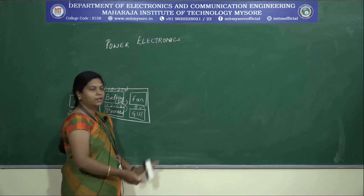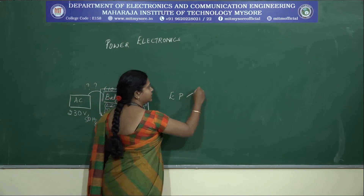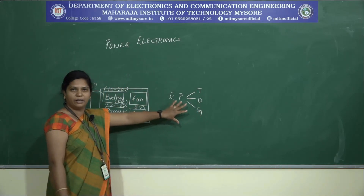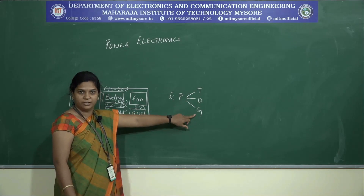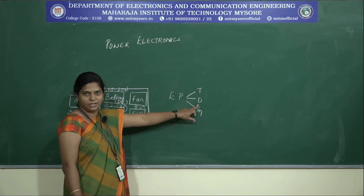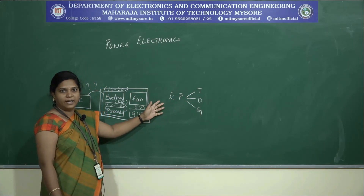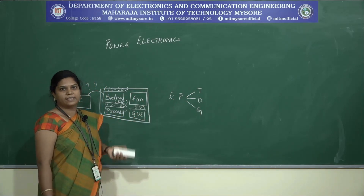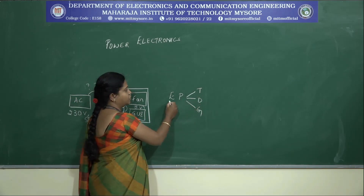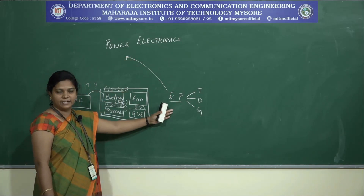As a prerequisite to study this subject, we need to know how electric power is transmitted, distributed, and generated. We should have a background of how electric power is generated at generating stations and then transmitted to different distribution stations — for industrial as well as domestic purposes. The equipment used as static or rotating equipment in transmission, distribution, and generation of electric power deals with the power part, which we have already studied in our lower semesters.